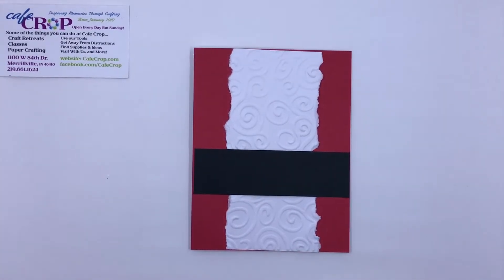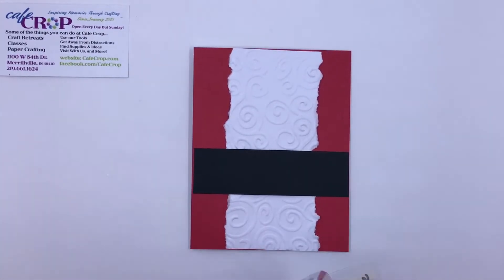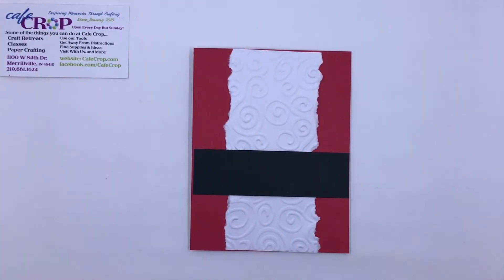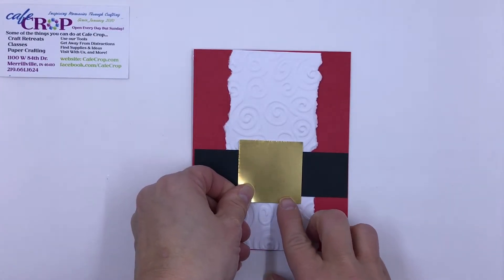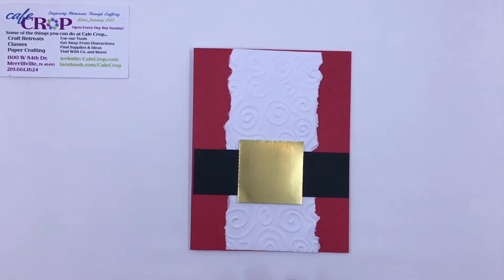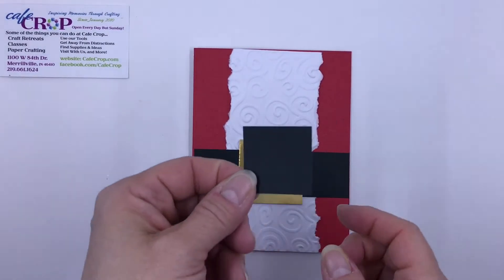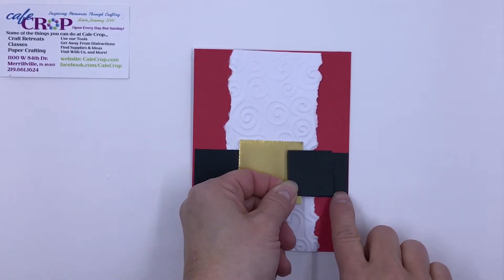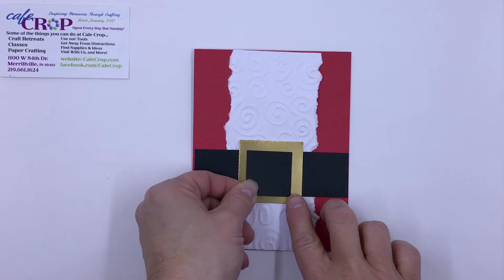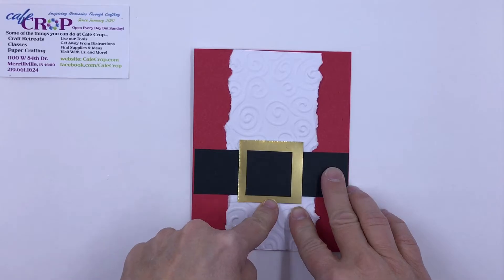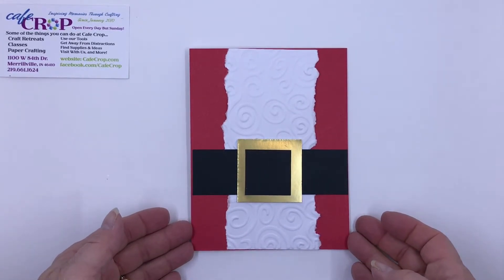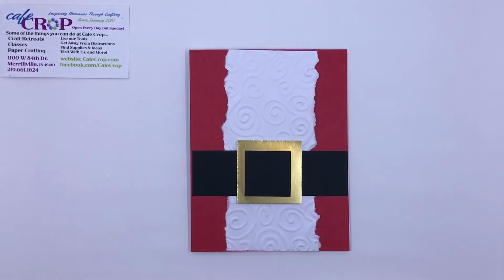And we're going to take our gold square and put some adhesive on the back of that. Now this is how we make our fast and easy buckle. We're going to put a full piece of gold right on here, and then we're going to take our black square that was cut to be the same width as our belt and line it up. And instead of having to cut a square out of the center of the gold, we have it all done for us just by layering it right on top.